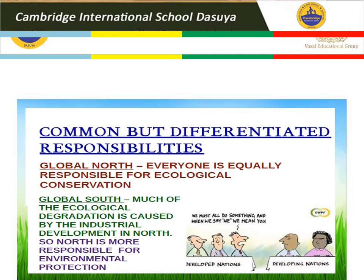Global North: everyone is equally responsible for ecological conservation. Global South: much of the ecological degradation is caused by industrial development in the north. So you can estimate from this statement that the north is more responsible for environmental protection.